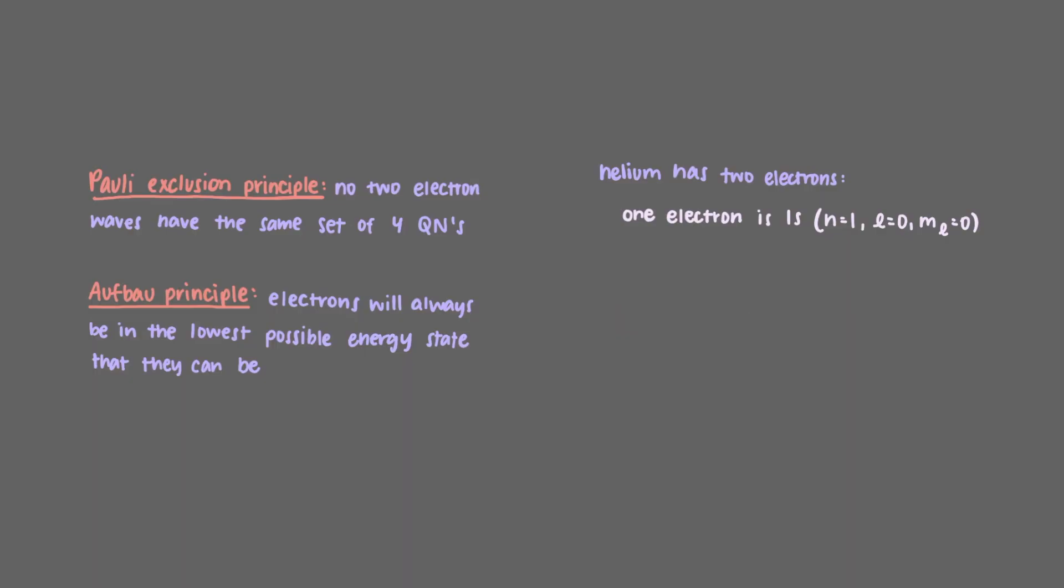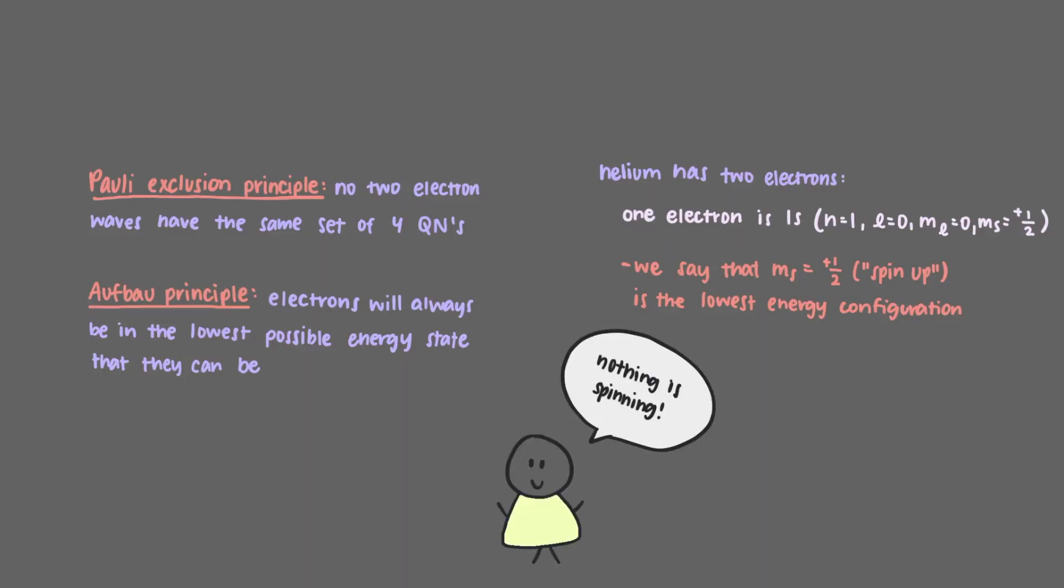For historical reasons, we say that m sub s equals plus one-half, which is spin up, is the lowest energy configuration. It has something to do with our physicists and their love of those magnetic fields. So our first electron is n equals 1, l equals 0, m sub l equals 0, and m sub s equals plus one-half, a spin up 1s electron, the lowest possible energy that an electron wave can be. Again, nothing is spinning.